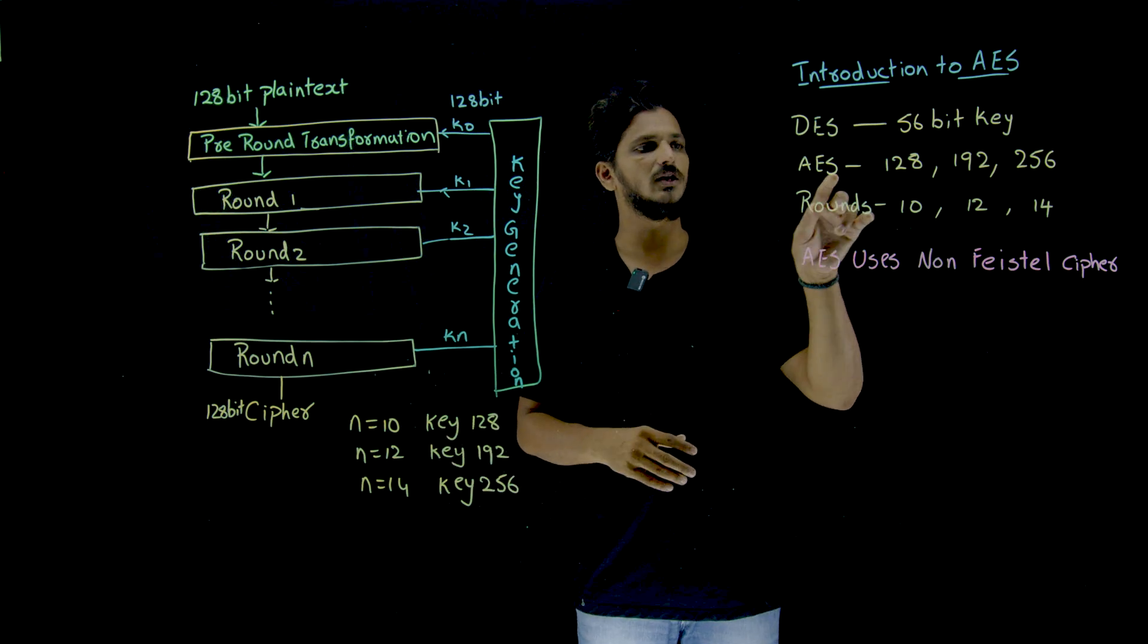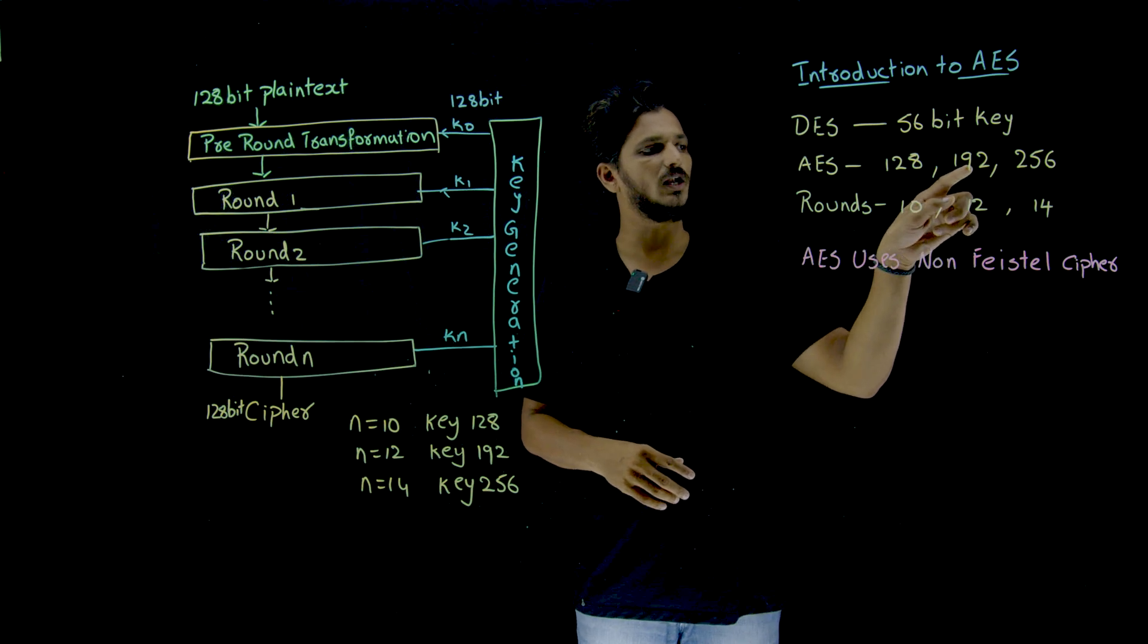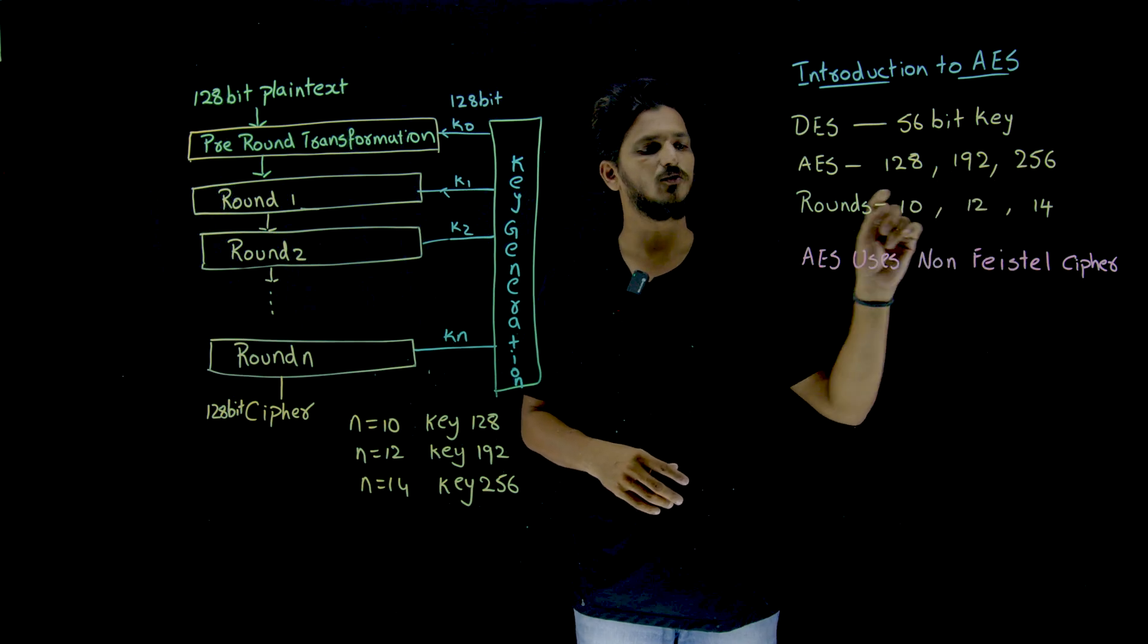So that is what we have written here. AES 128 means you go with 10 rounds, 192 means 12 rounds, 256 means 14 rounds.